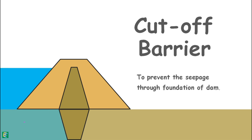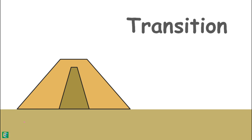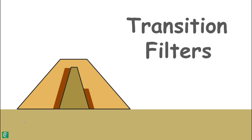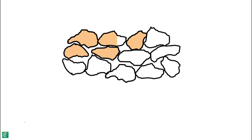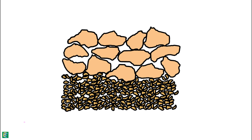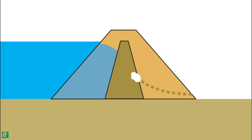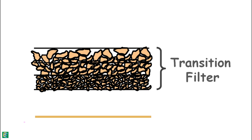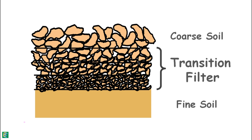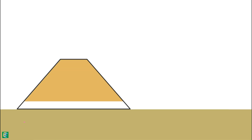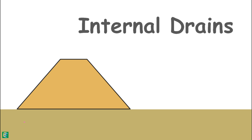The fourth component is the transition filters between zones of different soil materials. We cannot place very coarse-grained soil directly next to very fine-grained soil, because fine-grained particles will migrate through the voids of the coarse-grained material and may get washed out of the dam. Transition filters are designed to be more permeable than the soil they protect, yet their particles are not so coarse that fine particles of the protected soil can travel through the filter voids.